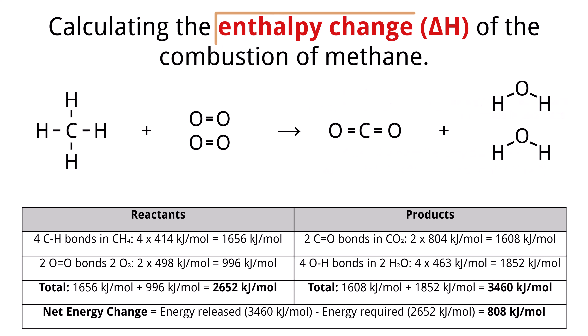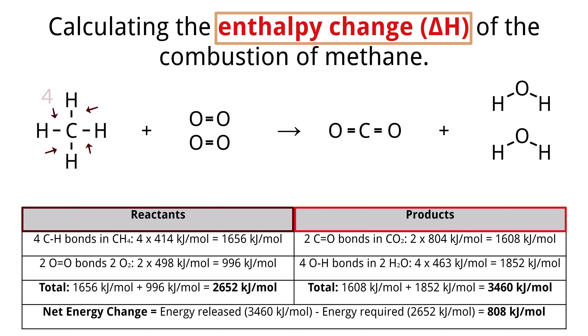To calculate the enthalpy change, delta H, of the combustion of methane, we first identify the bonds in the reactants and products and their respective bond enthalpies. These values are averages in kJ/mol because they represent typical energies rather than precise values for a particular molecule, and therefore may differ from experimentally measured values. On the reactant side, we have four C–H bonds in CH4: 4 × 414 kJ/mol = 1,656 kJ/mol.